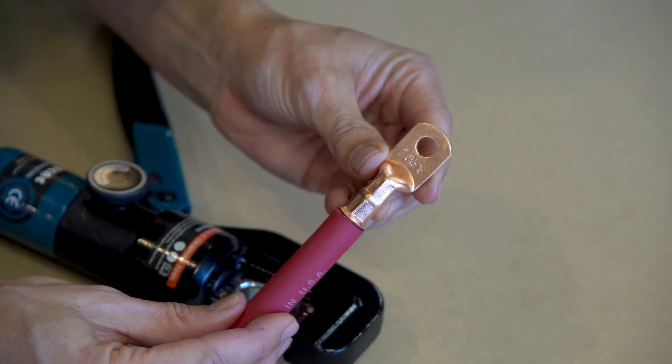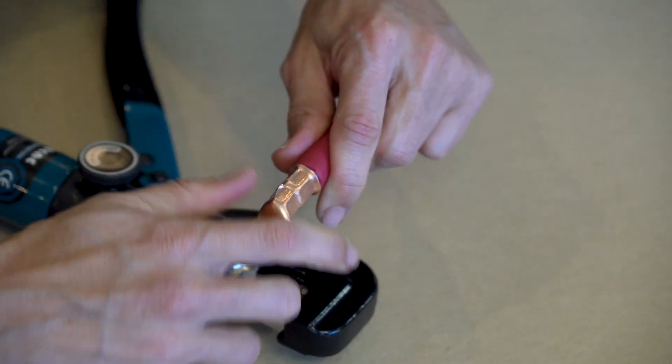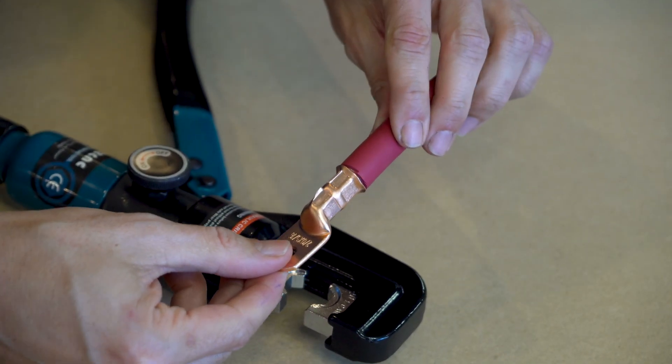And this is what your final crimp should look like. You should have a strong crimp that you cannot pull out.